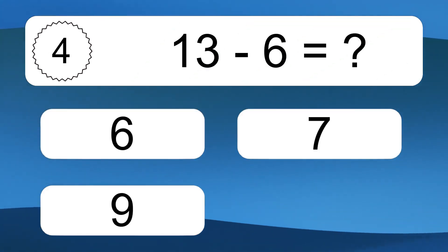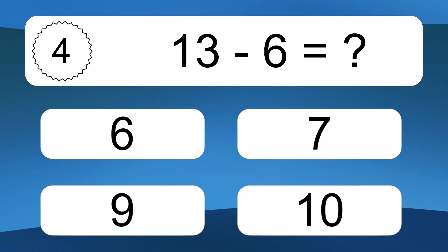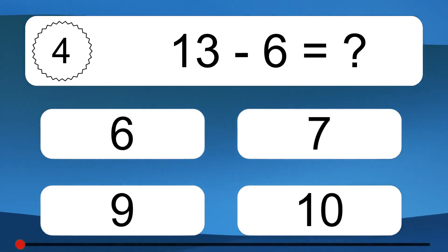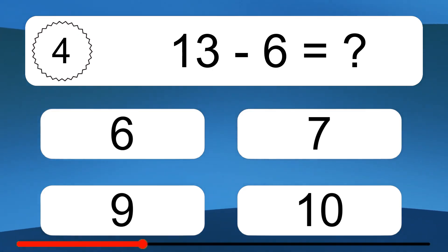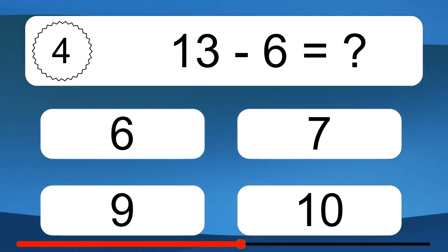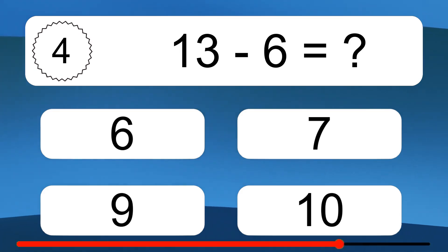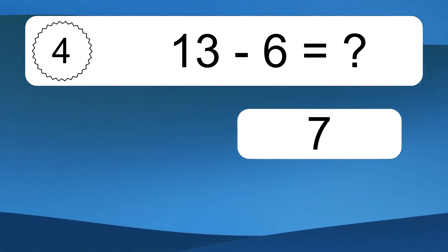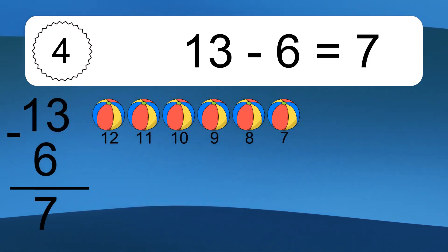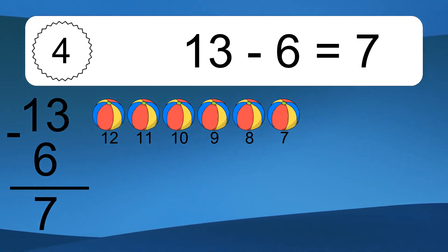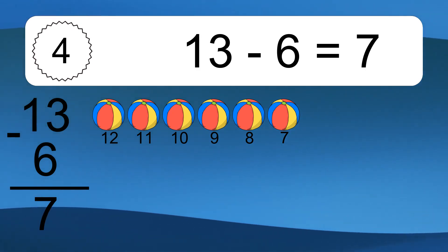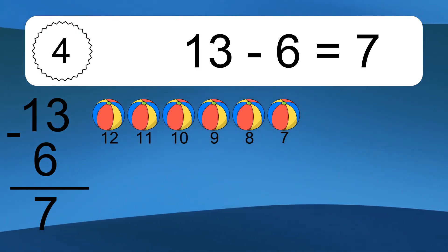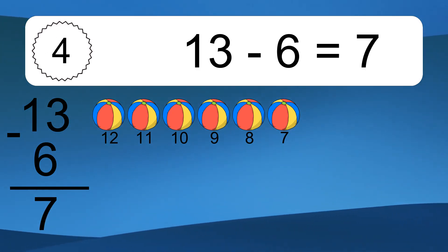13 minus 6 equals what? 13 minus 6 equals 7. Let's count it: 12, 11, 10, 9, 8, 7.